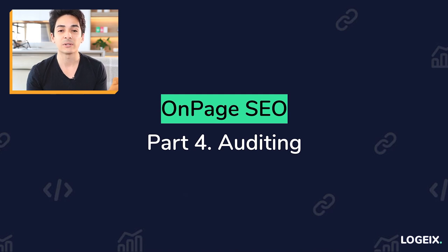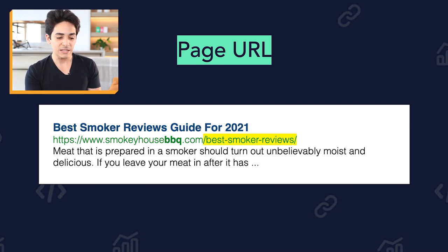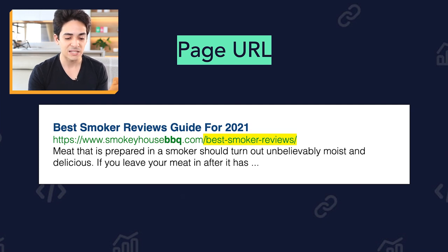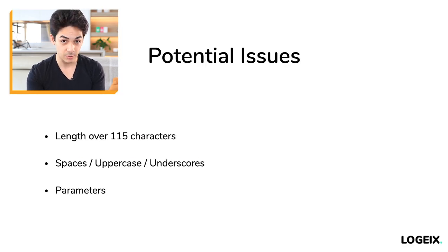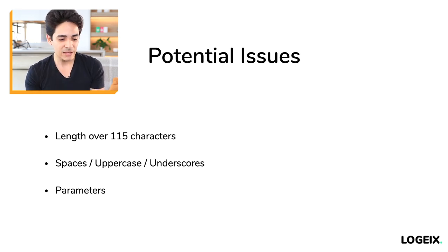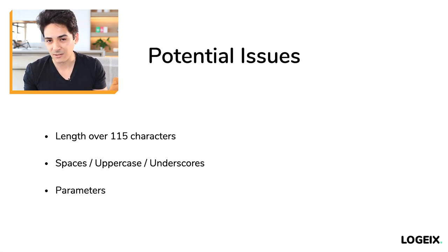We're going to go through each element one by one, starting with page URL. There are a few potential issues to look at here. The first is a length over 115 characters — shorter URLs are generally better. If you see a really long URL, it's something to investigate further, both from an SEO perspective and from a user perspective.